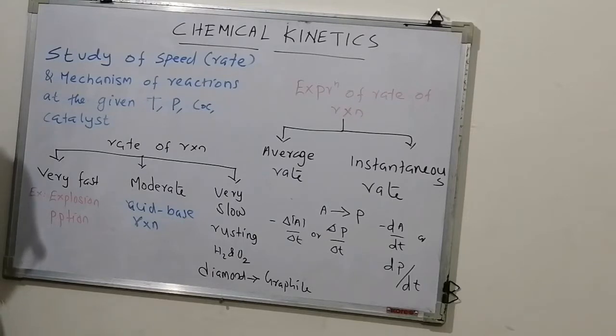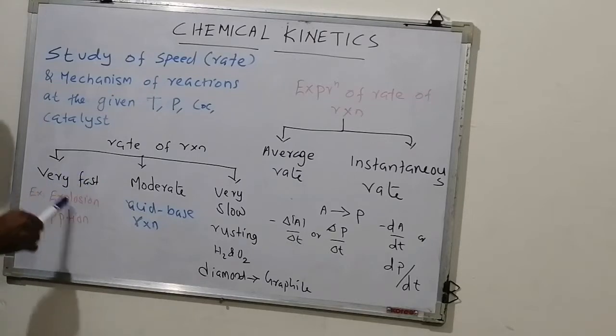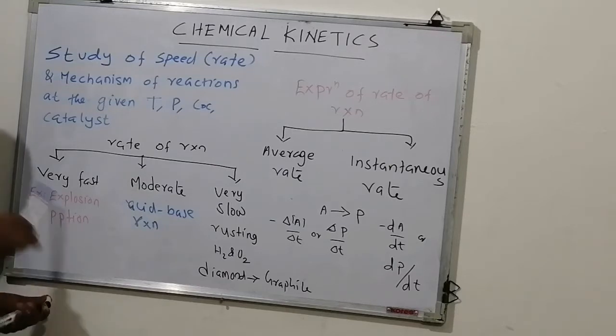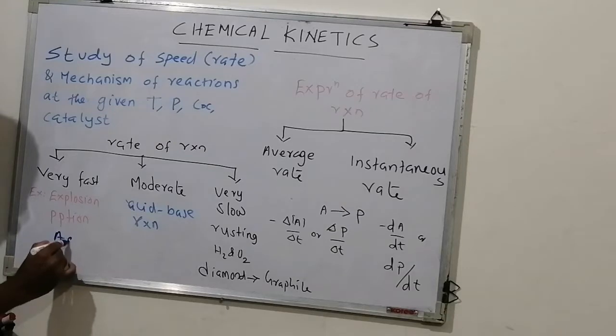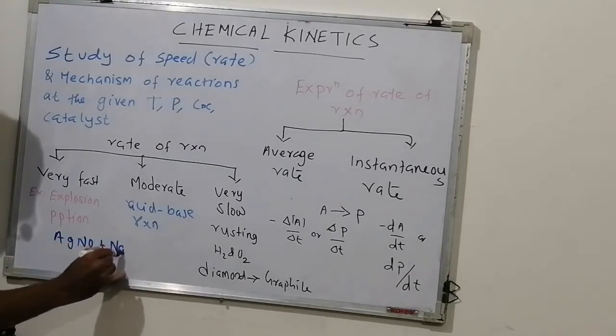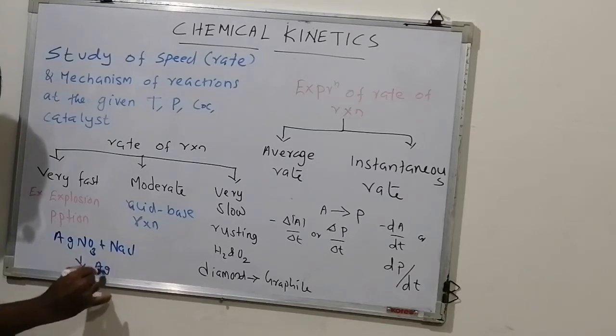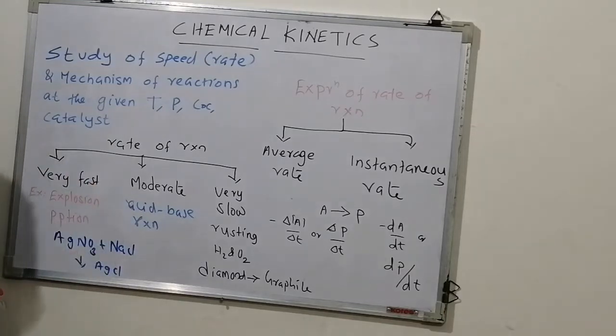Based on the speed, we have three types of reactions. One class is very fast reactions. Example: explosions. Second one is precipitation reactions. When you add AgNO3 to an NaCl solution, you know what will happen. Immediately, you will get AgCl. So, very fast reactions.